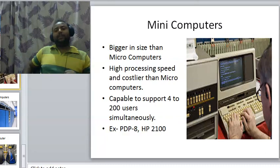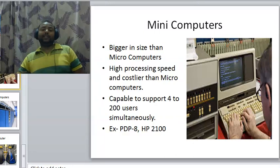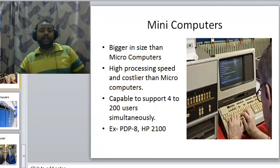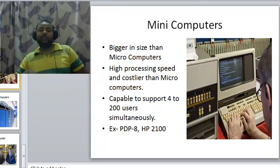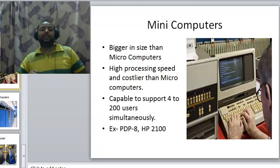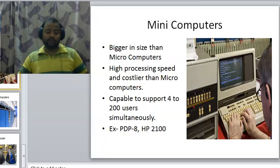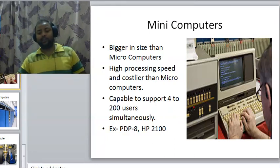Now we will see the second category — mini computers. These are bigger in size than micro computers, have high processing speed, and are more costly than micro computers. While a single user works on a micro computer, a mini computer supports 4 to 200 users simultaneously. Examples are PDP 8, HP 2100, etc. These are used in big organizations, industries, universities, and similar places.